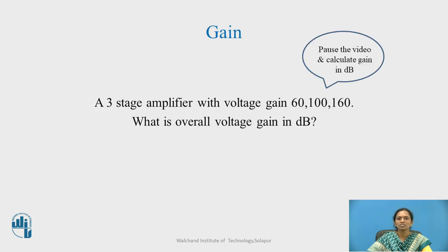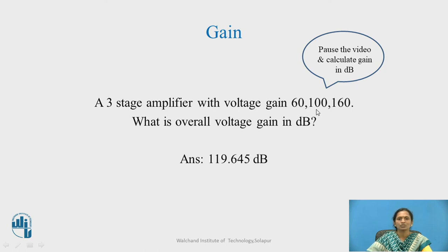Now, from this discussion, calculate the overall voltage gain in decibels. The voltage gains of the three stages are 60, 100, and 160 respectively. Convert each gain ratio to decibels and add these values. The answer is 119.65 decibels.